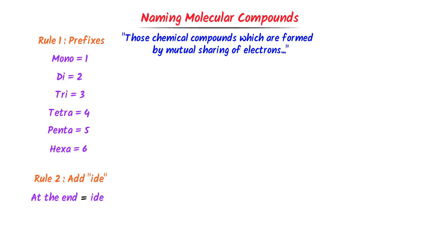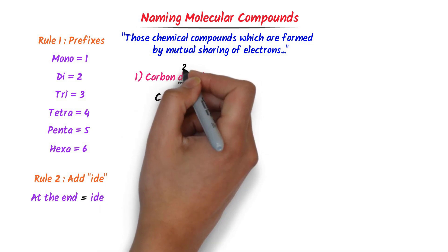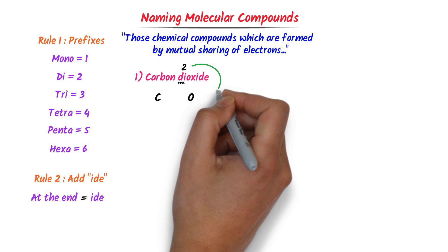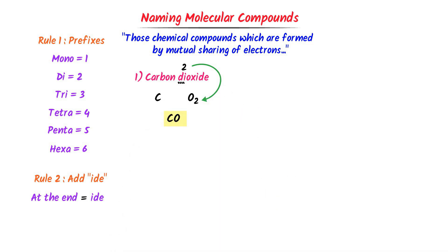For example, consider carbon dioxide. The symbol of carbon is C. Di means 2 and oxide means oxygen. So we write CO₂ — carbon dioxide. Using this rule, we can name any molecular compound.